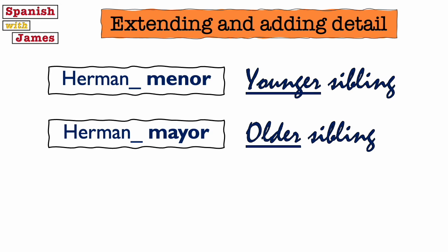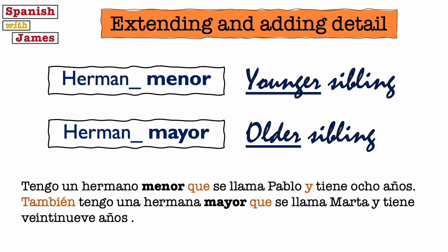To practice everything from this video, here's a paragraph including the word también which means also. Tengo un hermano menor que se llama Pablo y tiene ocho años. También tengo una hermana mayor que se llama Marta y tiene veintinueve años. This means: I have a younger brother who's called Pablo and he's eight years old. I also have an older sister who's called Marta and she's twenty-nine years old.